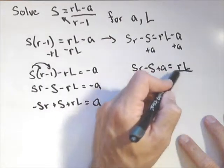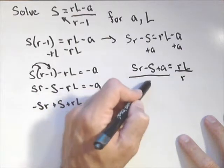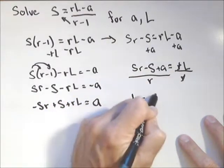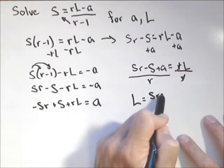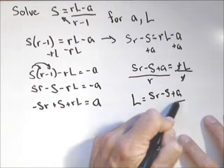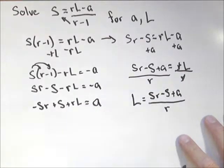Last step in solving for L. Divide both sides by R. And I got L equals SR minus S plus A all over r.